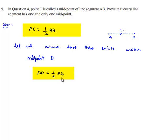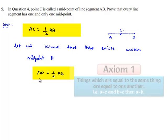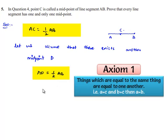Now, we know that things which are equal to same quantity are equal to one another. As AC is equal to half AB and AD is equal to half AB, AC will be equal to AD.